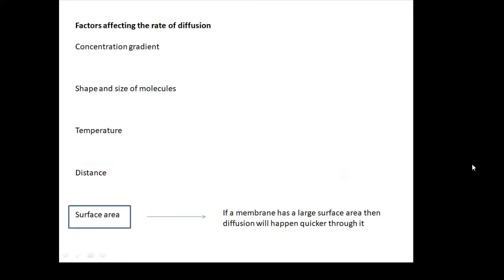And surface area: if we're talking about a membrane, then the larger the surface area, diffusion will happen quicker. This is why we have lots and lots of these little air sacs — alveoli — in our lungs, so that we have a large surface area.